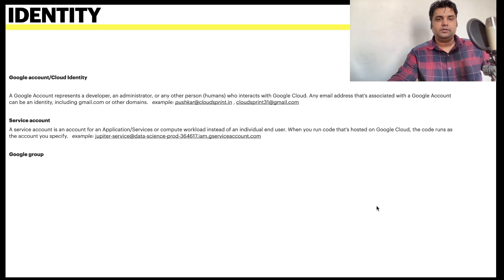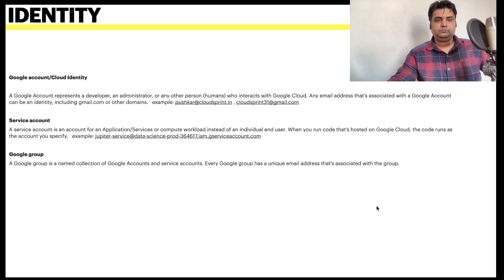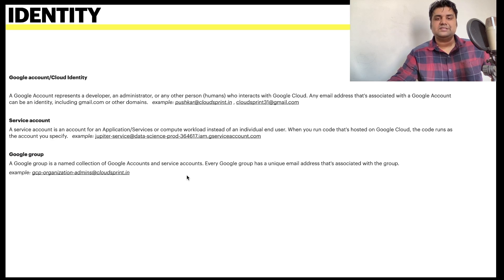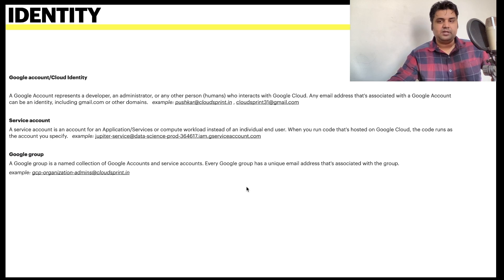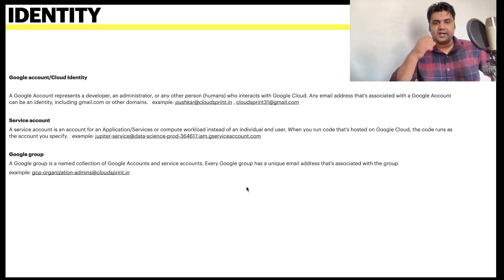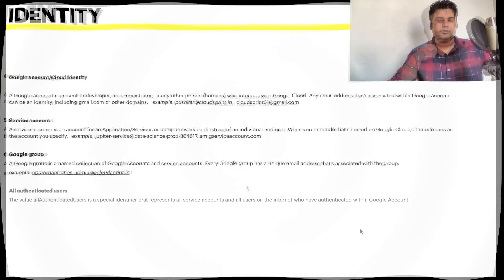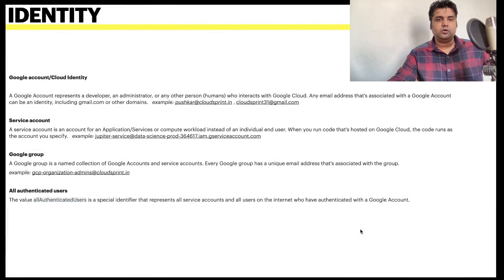The third identity type is a Google Group. A Google Group is a named collection of Google accounts and service accounts. Every group has a unique email address associated with it — for example, gcp-organization-admins.